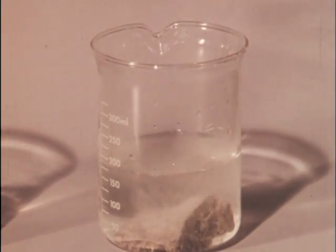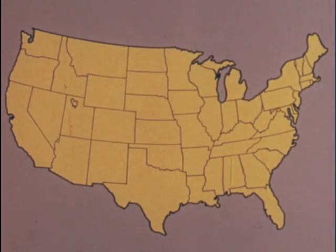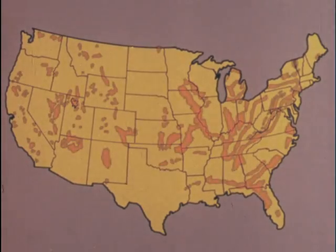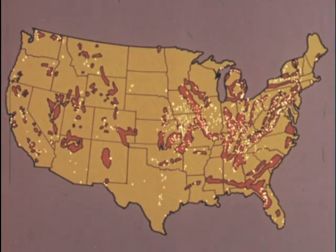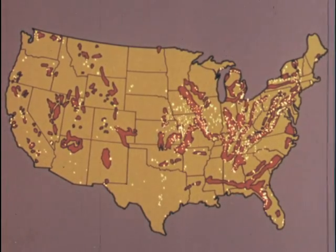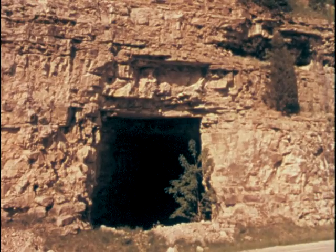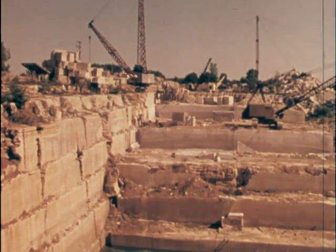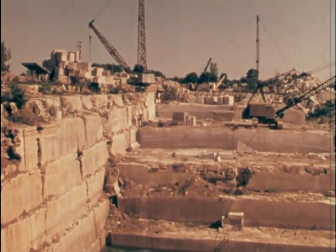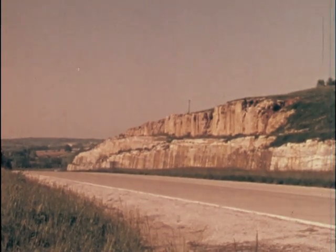Limestone is found in every one of the United States. Where would you look to find it? This map shows where there is limestone bedrock, and here are locations where it is mined. Although some limestone is taken from underground mines, most of it comes from open quarries where the supply is near the surface. Also in places where limestone is near the surface, highway and railroad cuts often expose the deposits.